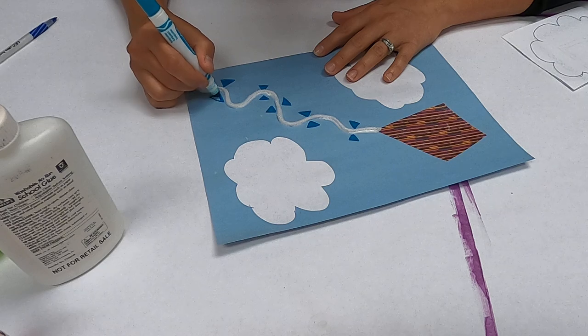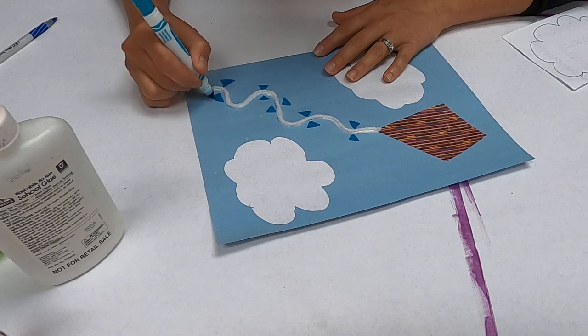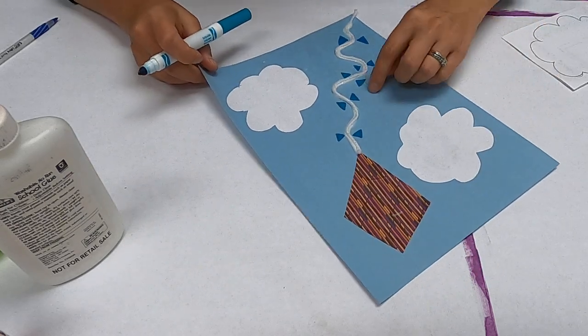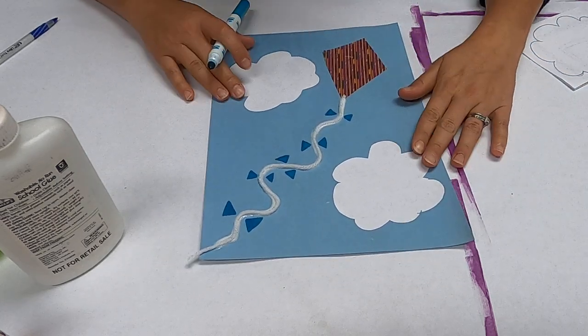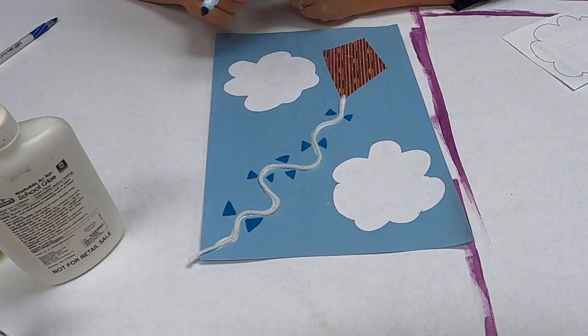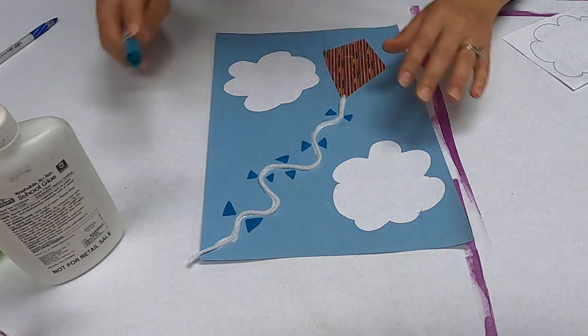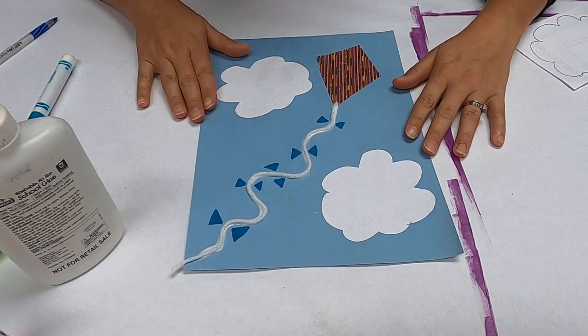If you want to make something else in the sky or if you want to draw the sun or even a little airplane flying in the background, you can do that too. So there you have it. Your quick and easy little kite that's flying in the sky. Hope you enjoyed.